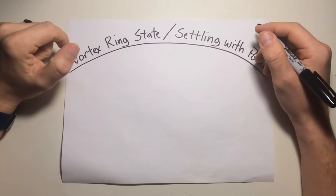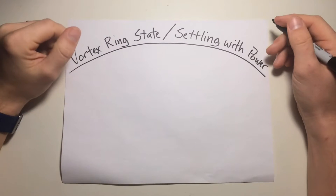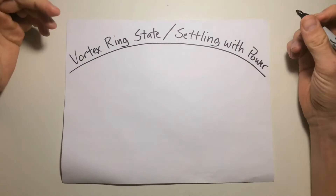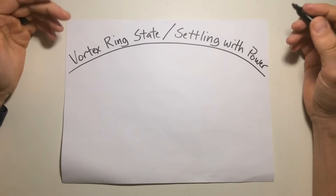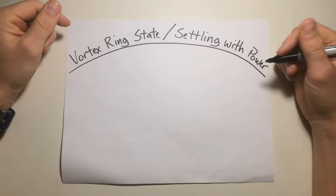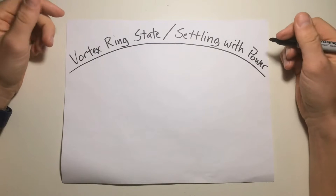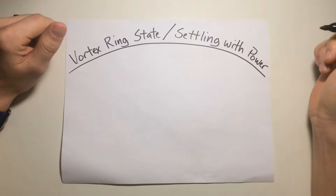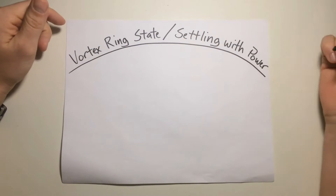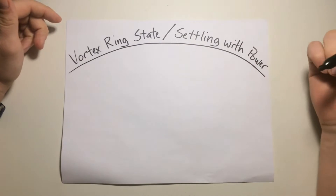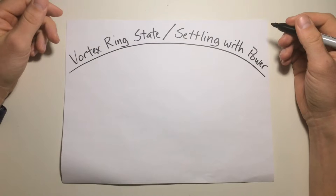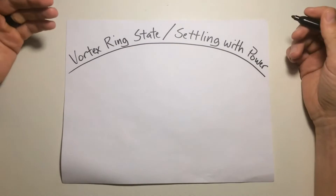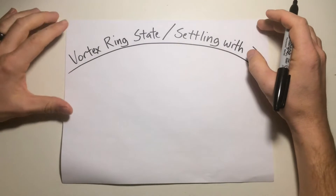Hello and welcome back to Helicopter Lessons in 10 Minutes or Less. It's Jacob again and today's topic is vortex ring state slash settling with power. I just want to take a quick minute to thank you guys for your likes, subscriptions, and comments. I really didn't expect this channel to generate as much buzz and feedback as it has in such a short amount of time. This class is addressing settling with power, which was a request from a previous video. So if you like what you're seeing, make sure you like and subscribe, leave a comment, and we'll work from there.